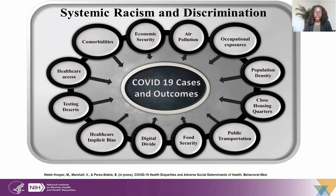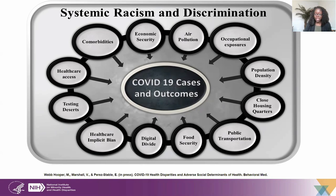A key point is that disparities in COVID-19 transmission, infection, and death are not because racial and ethnic minoritized groups are inherently more susceptible to the virus, but because of social inequities that have led to more pre-existing conditions like heart disease, obesity, diabetes, and other comorbidities, as well as social inequities that increase the likelihood of exposures.